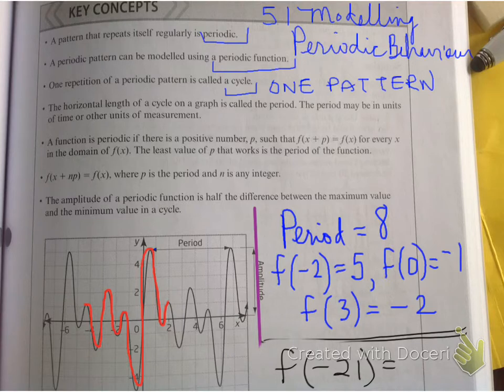Alright. Did you get the answer? Well, hopefully you got that negative 21 subtract three is negative 24. And that is a multiple of eight. Therefore, f at negative 21 is equal to negative two.